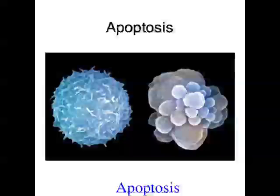If cells are always replicating via mitosis, why don't we keep getting bigger? The reason is that cells are always dying too. A great example: the vast majority of dust in your home is made up of dead skin cells that have fallen off you and your family members. When cells die, they do so via a process called apoptosis — programmed cell death. Cells are actually supposed to die all the time, replicating when required and dying when required.